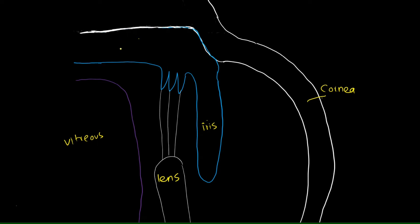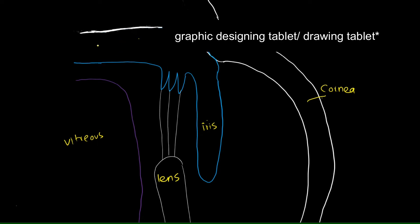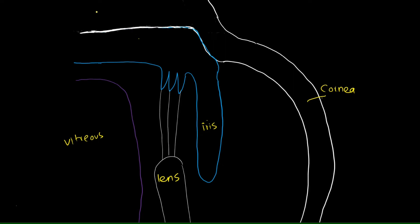I'd like to give a shout out to my friend who lent me his graphics tablet — I'm writing now, not using a mouse, so thank you! We know the three basic layers of the eye: the outermost layer called the sclera, the middle layer called the choroid, and the internal neuronal layer which comprises the retina and other structures.